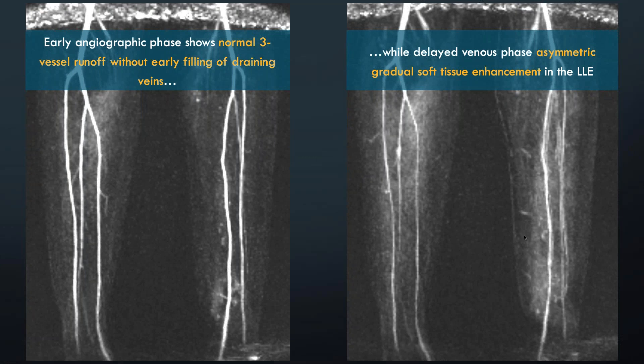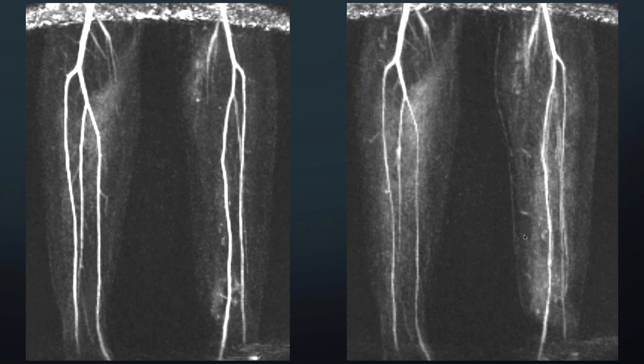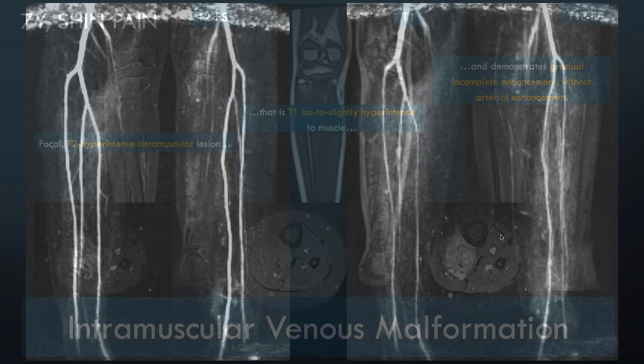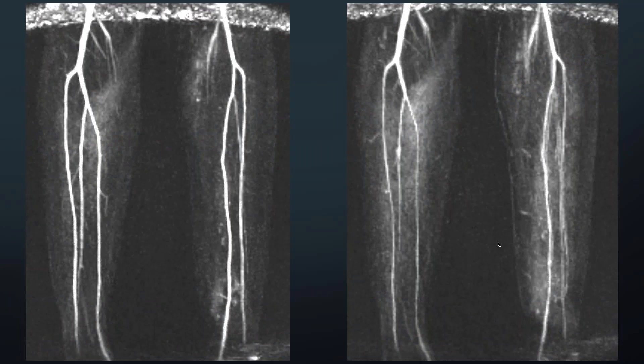When venous malformations are embedded in muscular tissue, is there a different treatment strategy? This particular lesion is actually closer to FAVA — fibroadipose vascular anomaly — because of the amount of fat within the lesion. These lesions tend to be quite fibrotic, so sclerotherapy is often not particularly satisfying. You may get temporary relief but symptoms often recur and can be worse. For these, if there are focal symptoms you could use cryoablation, or alternatively work with your orthopedic surgeon who may be able to resect the entire muscle.